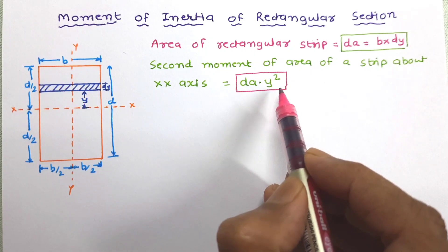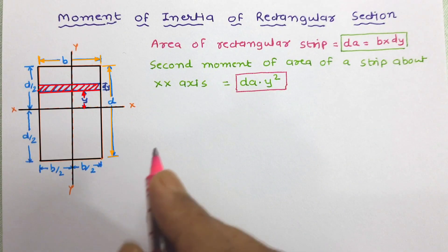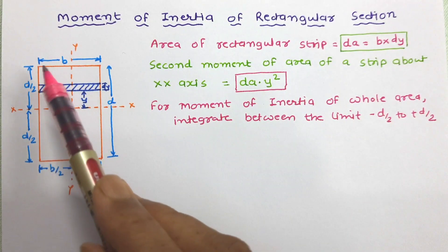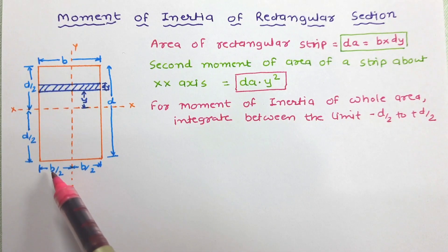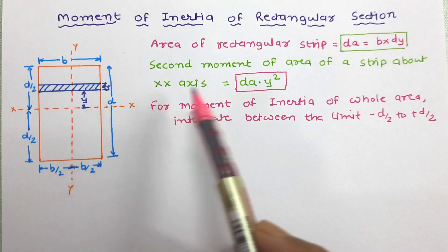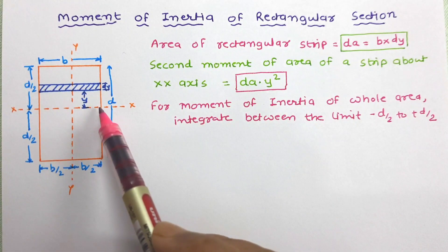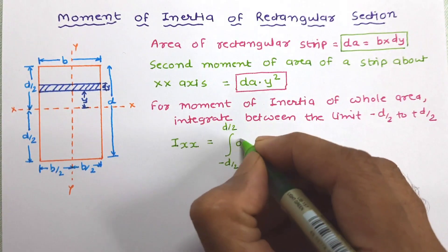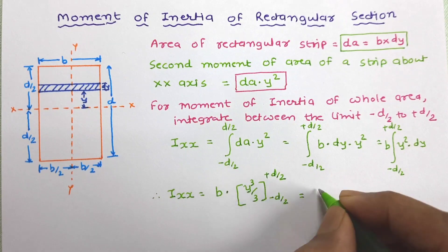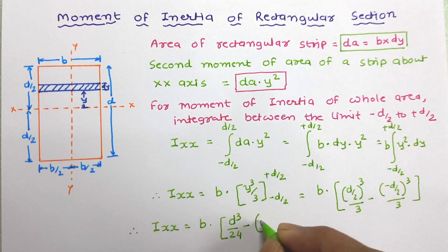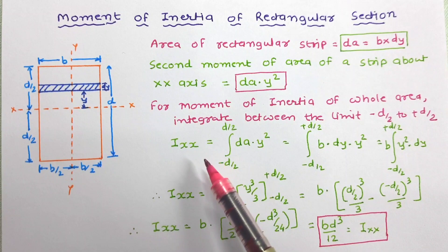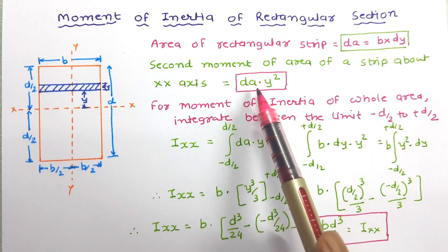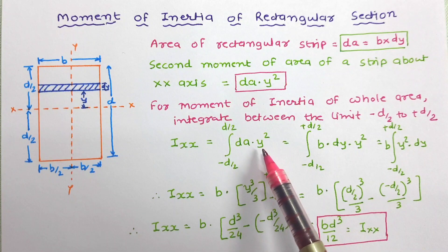Using this moment of inertia we will work out the moment of inertia of the complete rectangle. To get the moment of inertia of this complete rectangle about the centroidal axis, we will integrate the moment of inertia of this strip within the limits of minus d by 2 to plus d by 2. Integrating with these limits, the integration of the moment of inertia of the strip, dA times y squared, is to be carried out.